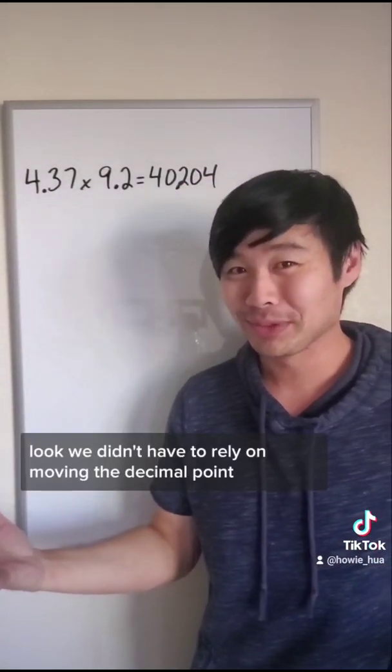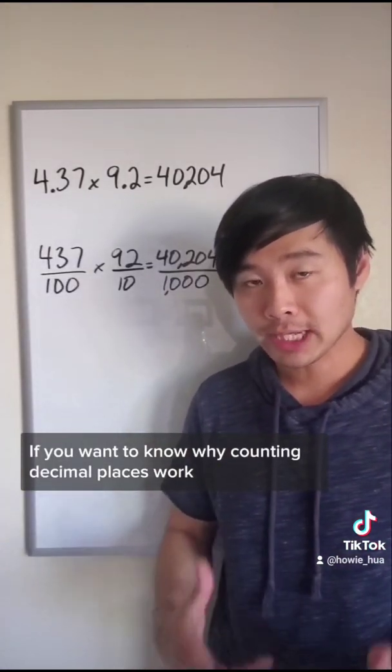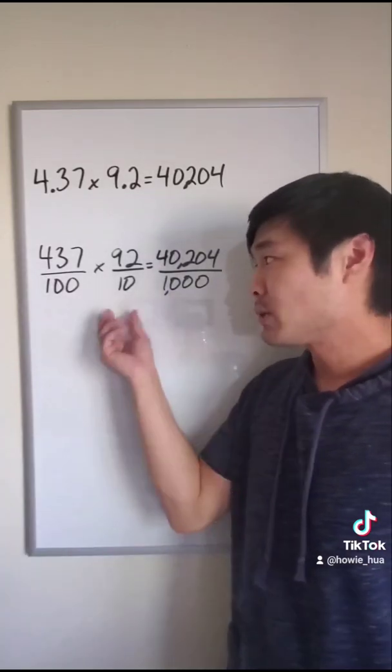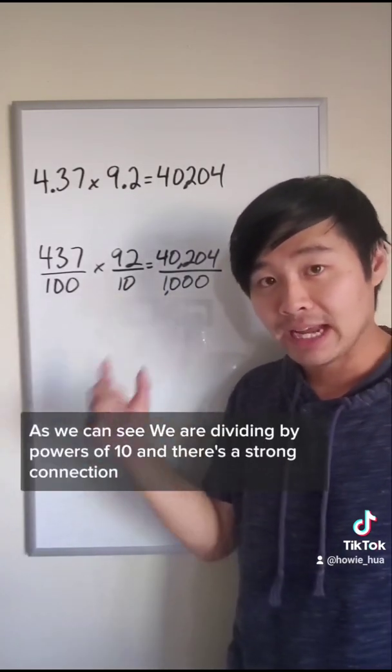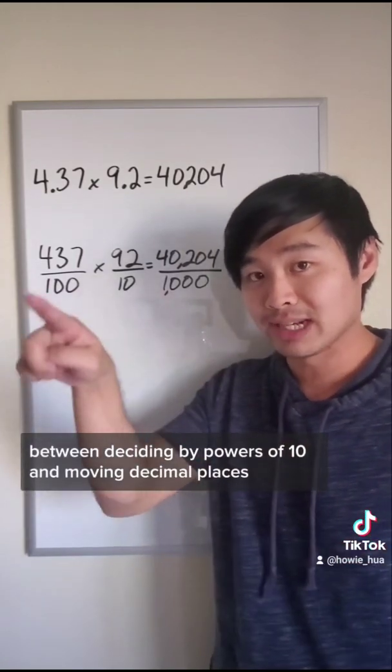Look, we didn't have to rely on moving the decimal point. If you want to know why counting decimal places work, this can be shown by converting these into fractions. As we can see, we are dividing by powers of 10 and there's a strong connection between dividing by powers of 10 and moving decimal places.